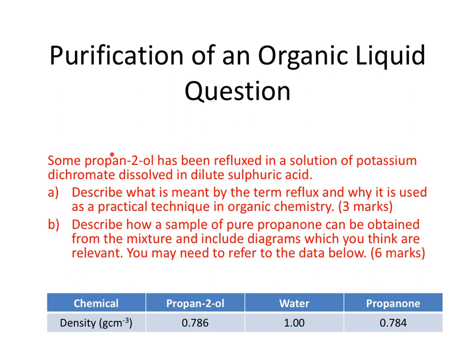We're told we've got a sample of propanol and we're oxidizing it using potassium dichromate dissolved in sulfuric acid. There are two questions asking about the practical technique. The first one is asking you why we reflux, and the second question is on how you would purify the mixture at the end.